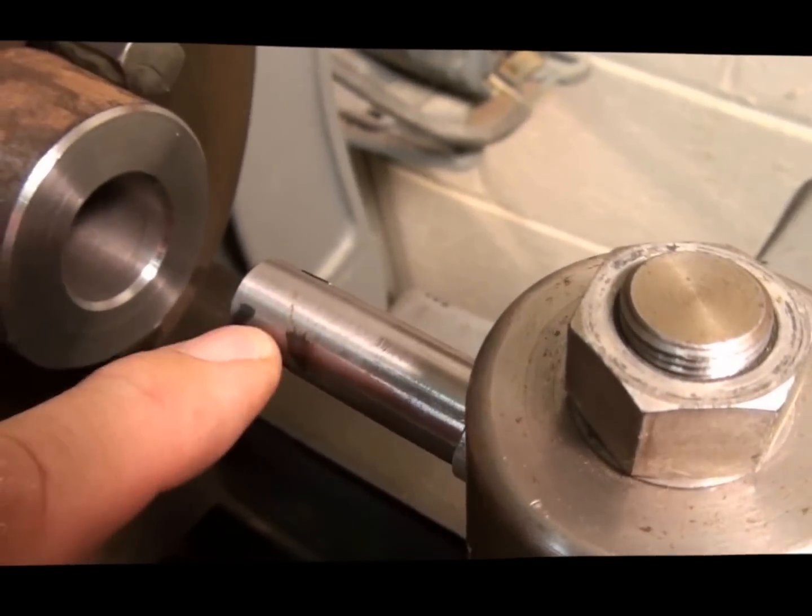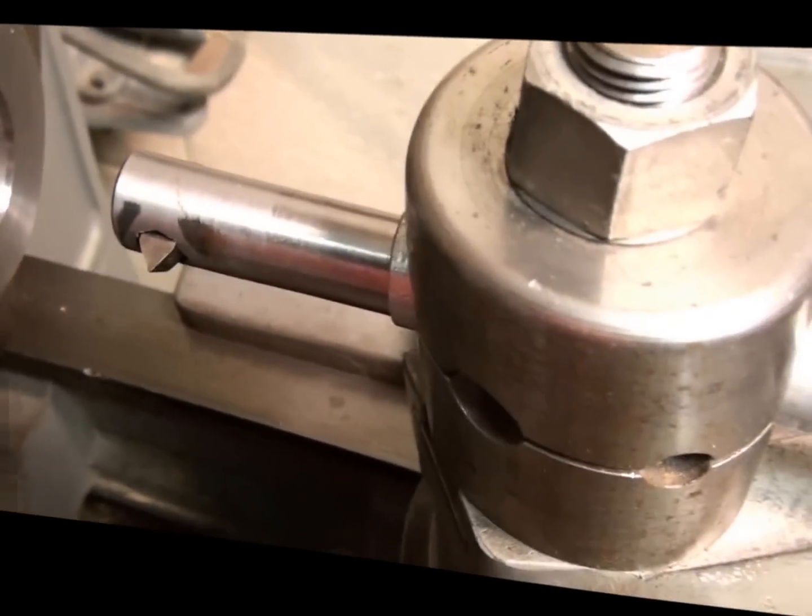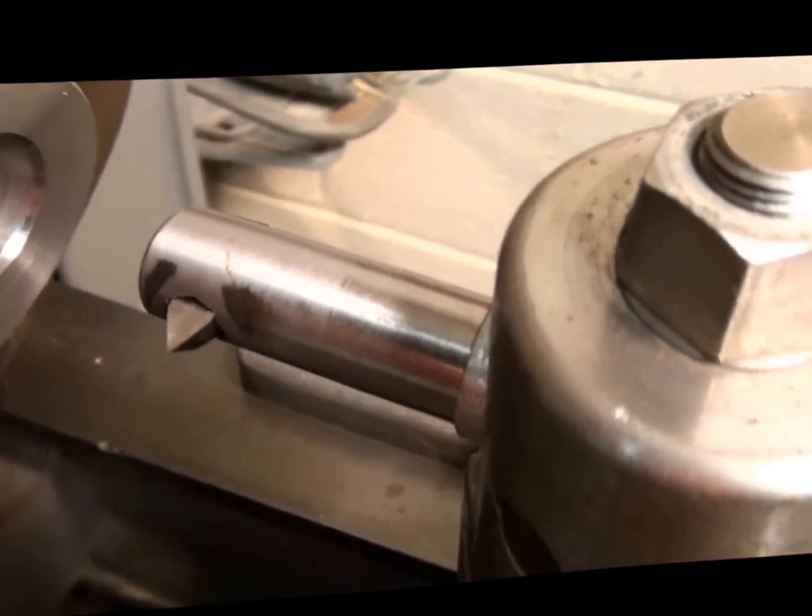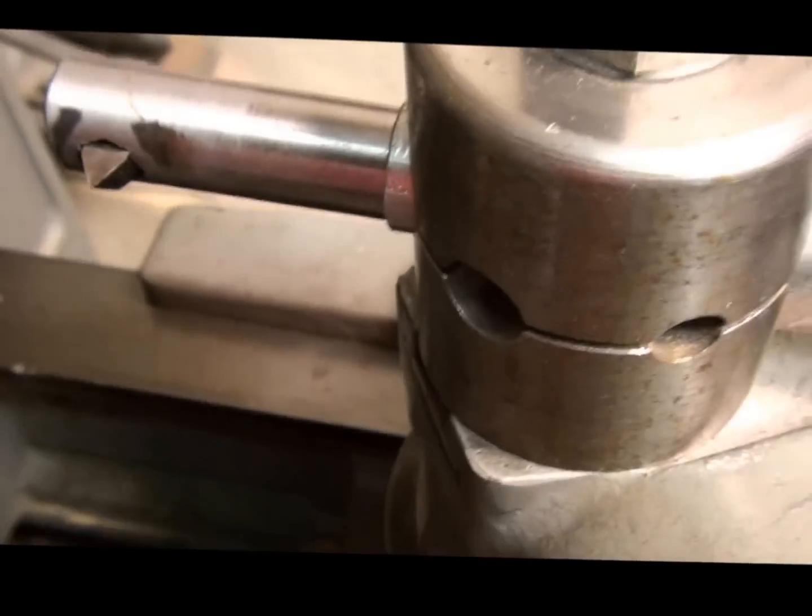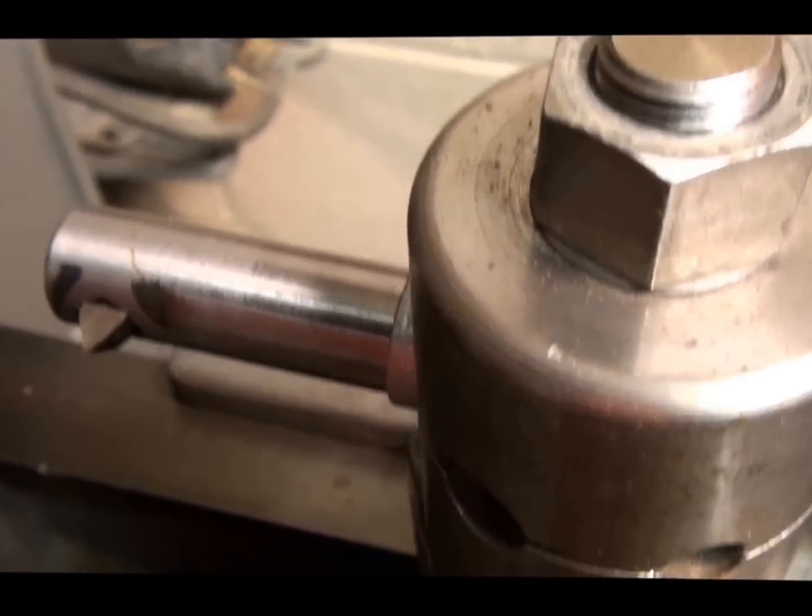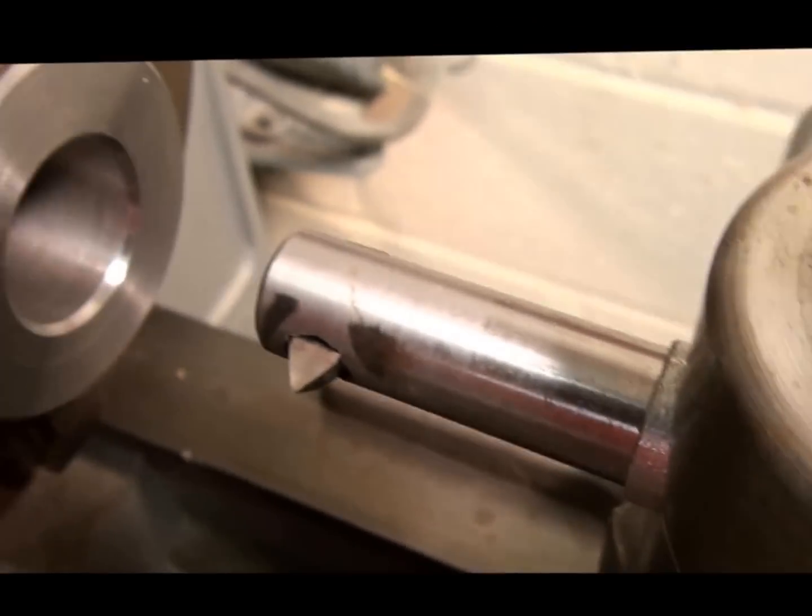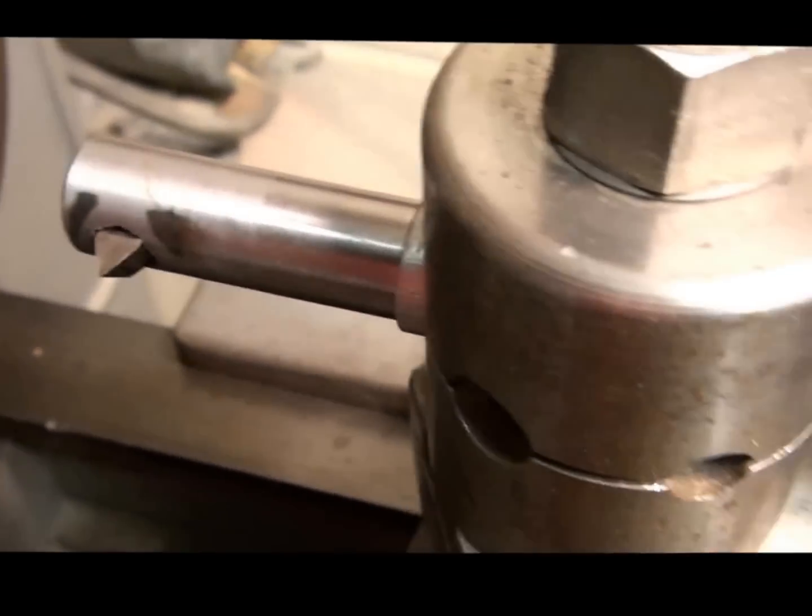It's the same threading tool as used on the external. The flat's the same, the angles are the same, the helix angle's the same, it's all the same. It's just I used a smaller one, a quarter inch in this case, instead of a three-eighths that we used on the other one, because everything has to fit inside the hole. We're doing internal thread, it all has to go inside.